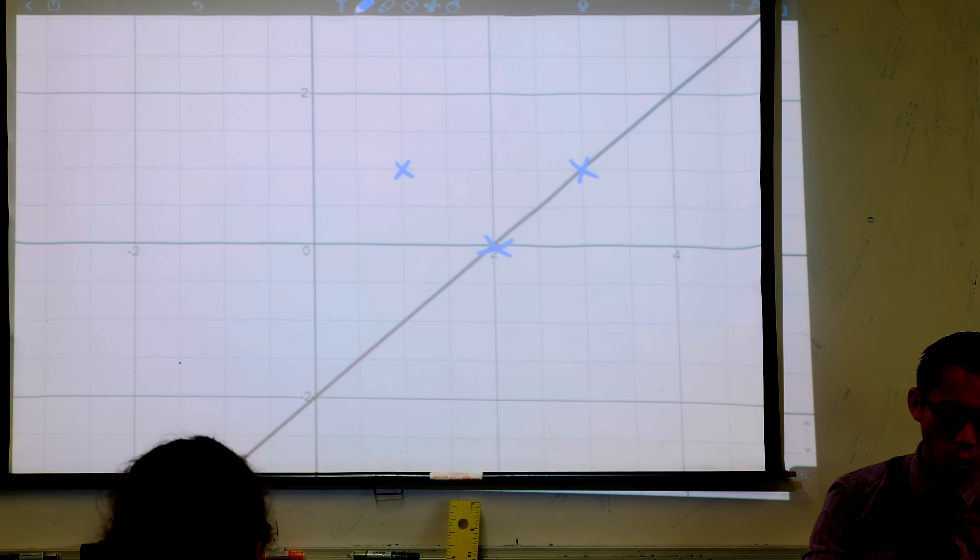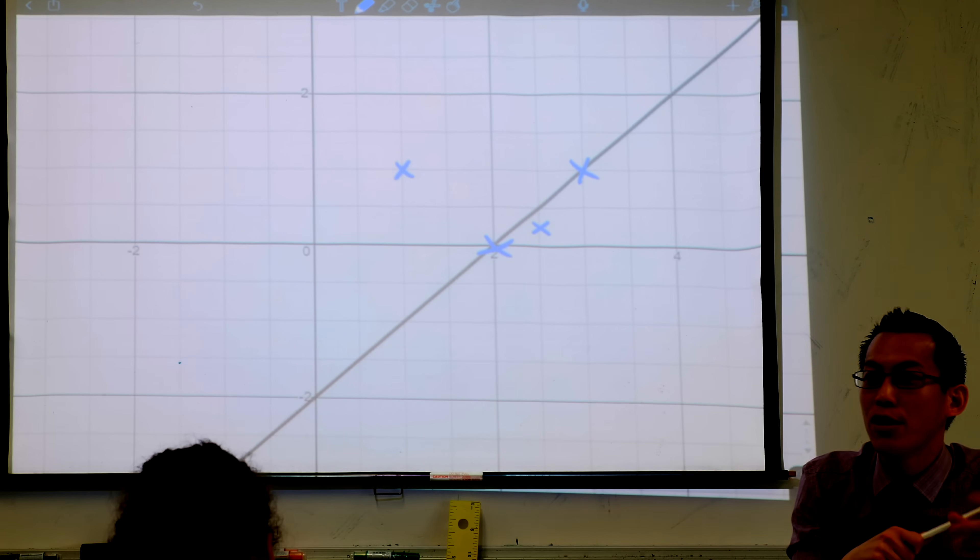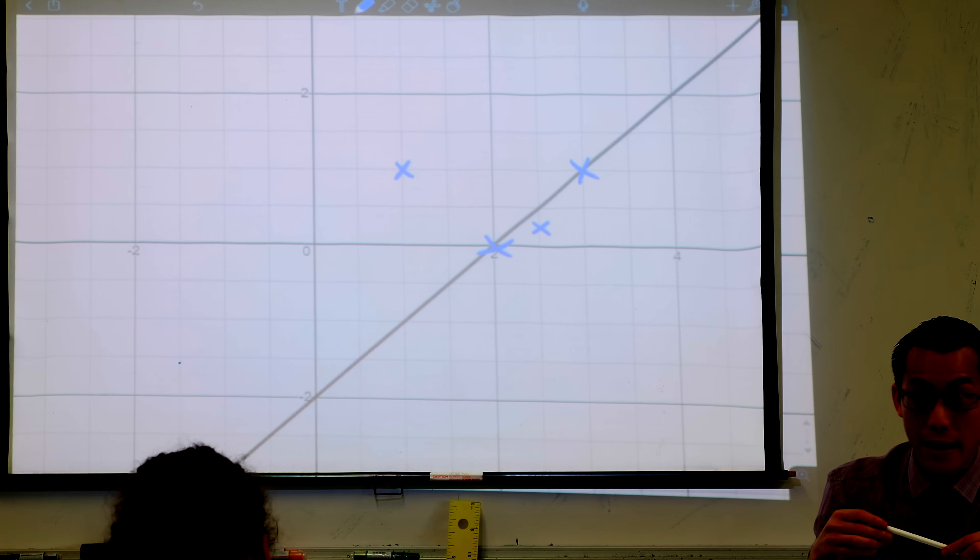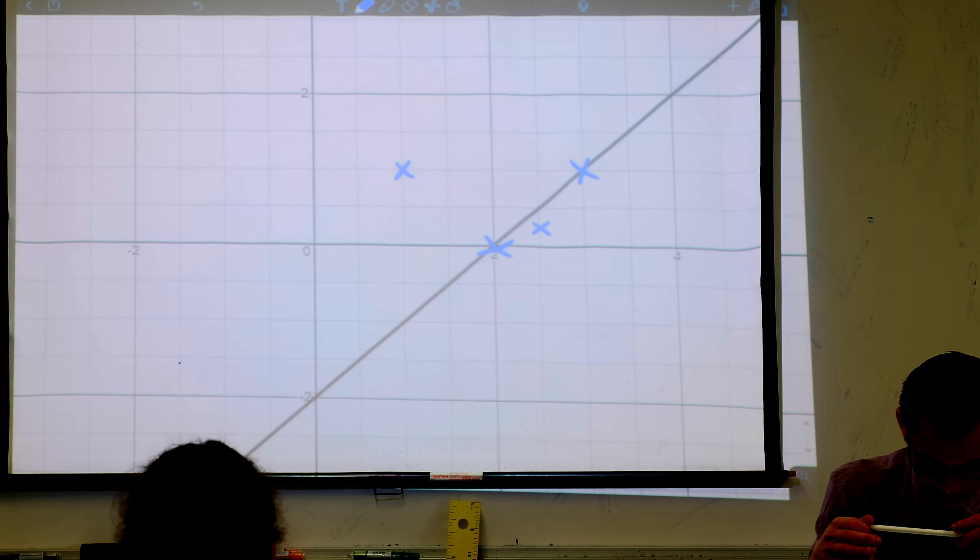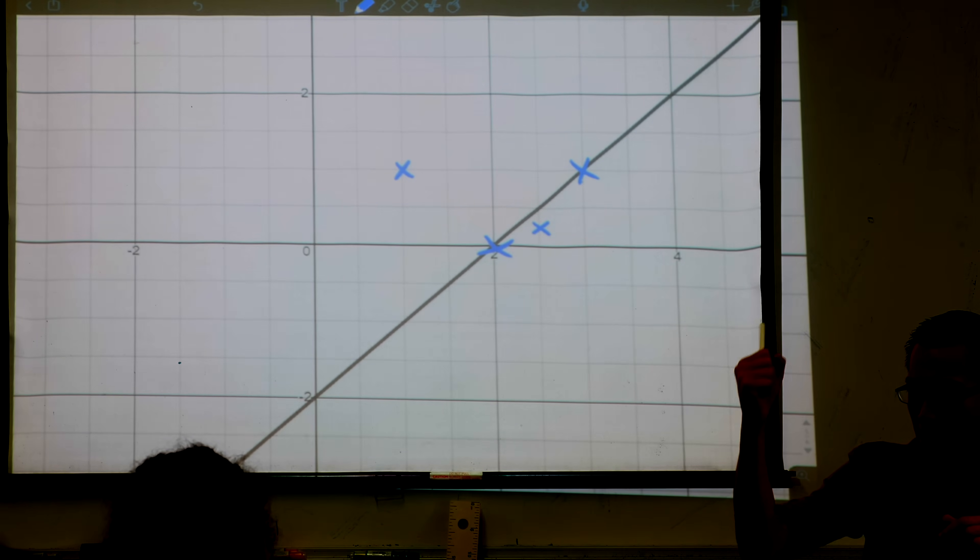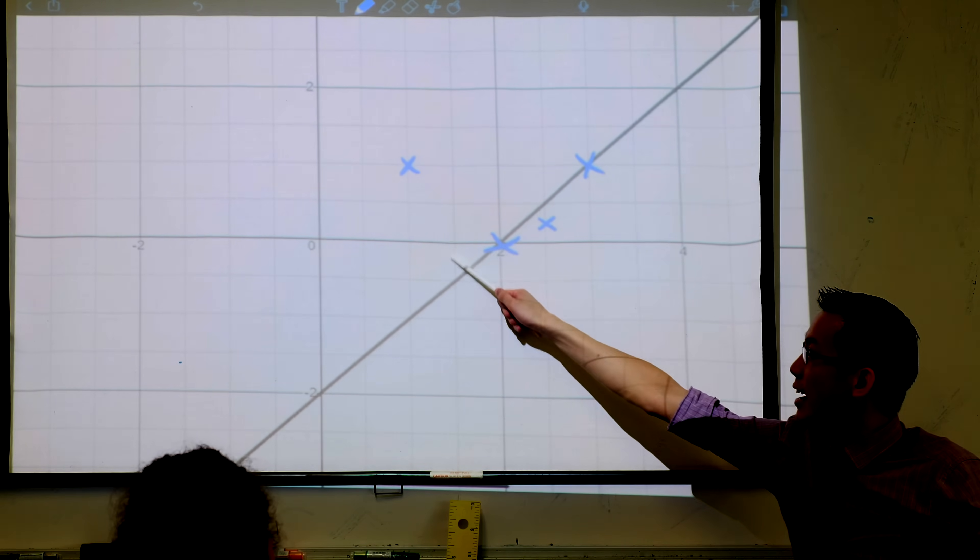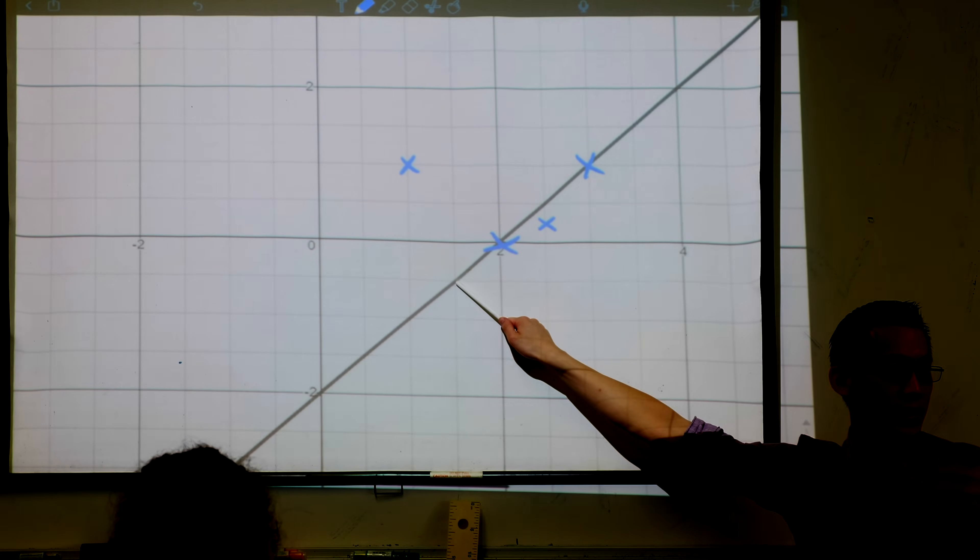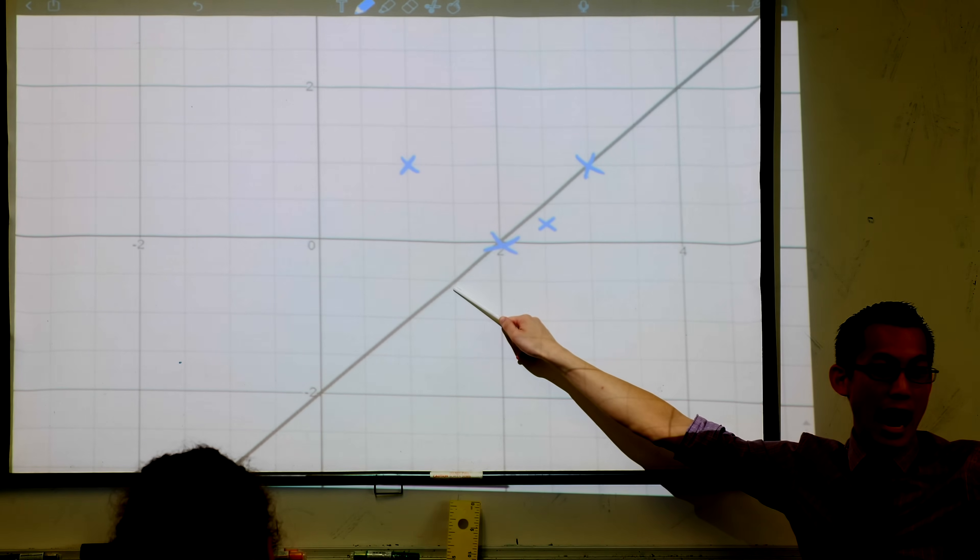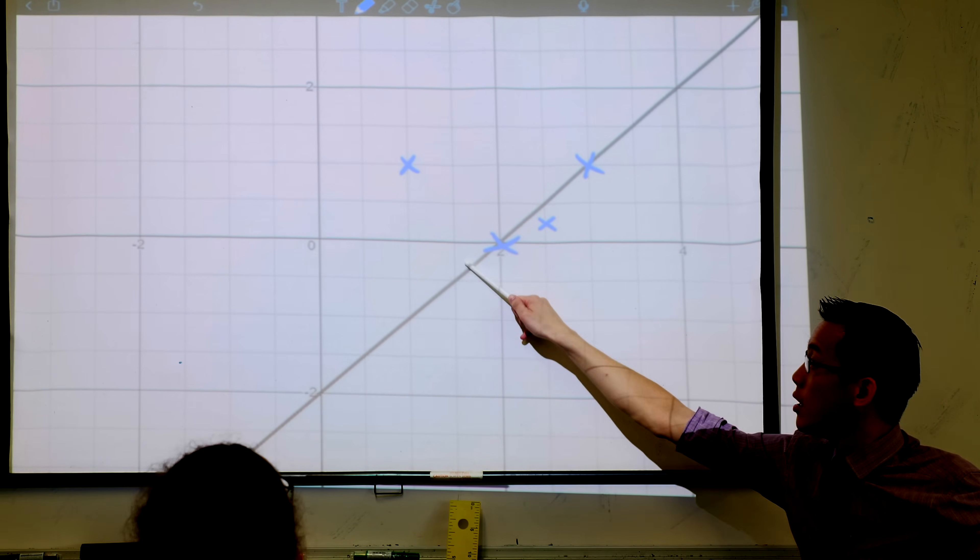Small values get smaller, big values get bigger. Squaring is like Captain America, like that super soldier serum—it makes the bad guy badder and the good guy gooder. You can see the same thing's happening over here. You've got negative a half here. What happens to the negative? I'm squaring, so it's all positive. But a half times a half gives me a quarter.